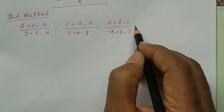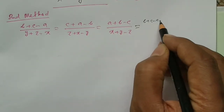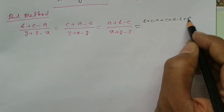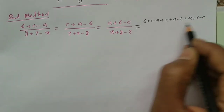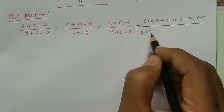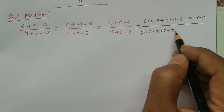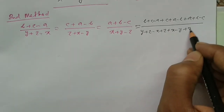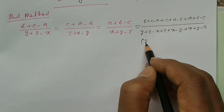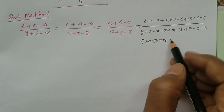Applying the sum property (Yogphal): B plus C minus A, plus C plus A minus B, plus A plus B minus C, by Y plus Z minus X, plus Z plus X minus Y, plus X plus Y minus Z.